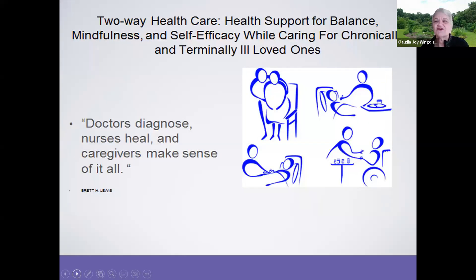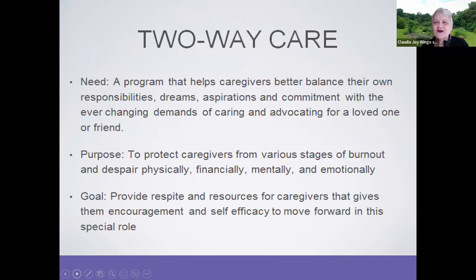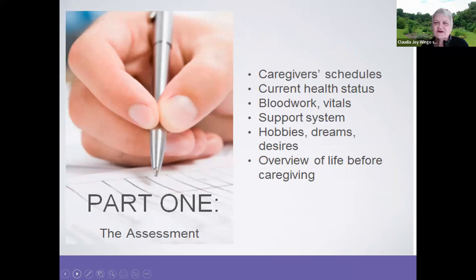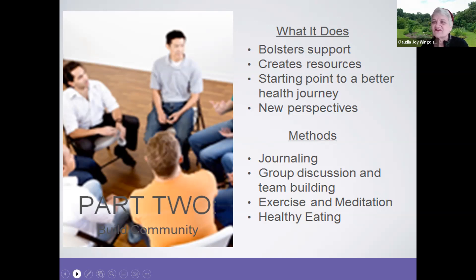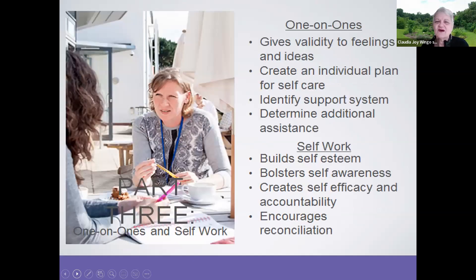This was an interesting program called 'Two-Way Care,' really making sure that caregivers were able to balance their own lives. It started by assessing caregivers and finding out where they were right then, what their hobbies were, and what life was like before caregiving. Then it built community with other caregivers, found ways to help each other, and supported exercise, meditation, healthy eating, and a little time away from caring to look after themselves, along with one-on-ones and self-work to help them continue on that journey.